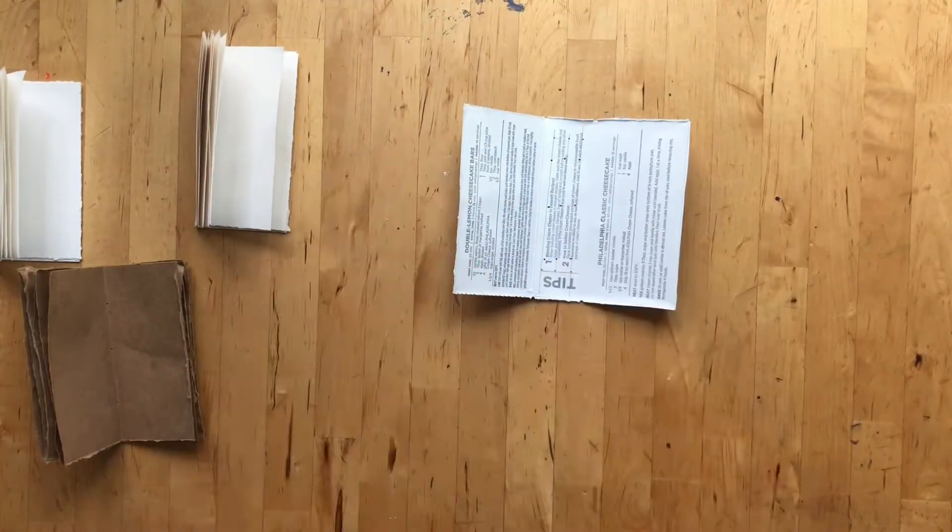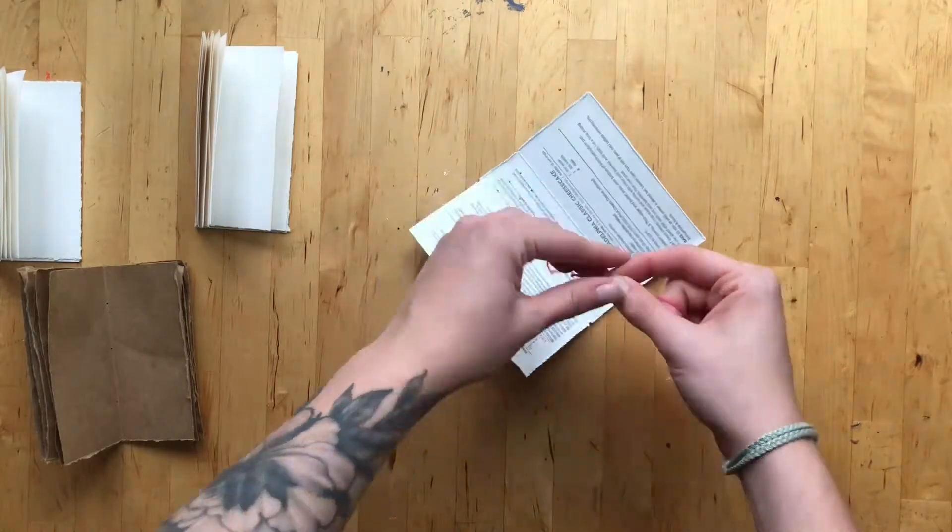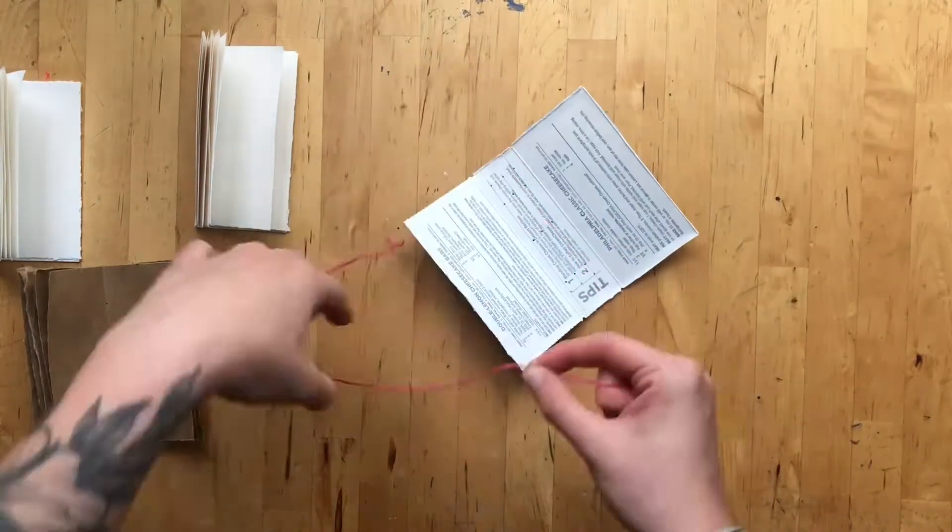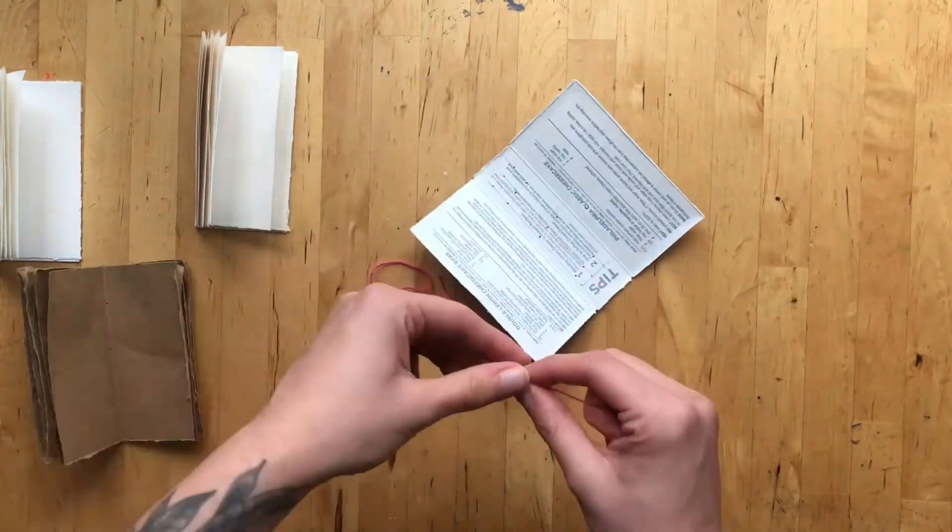Then, sew your signatures into the cover. This step is the same process as making a pamphlet stitched book. Be sure to check out our previous video on how to do this.